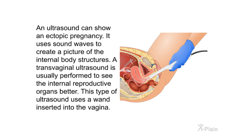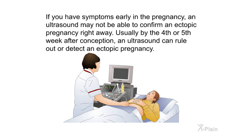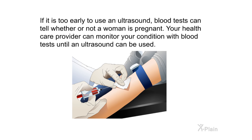An ultrasound can show an ectopic pregnancy by using sound waves to create a picture of internal body structures. A transvaginal ultrasound is usually performed to see the internal reproductive organs better, using a wand inserted into the vagina. If symptoms appear early in pregnancy, an ultrasound may not immediately confirm an ectopic pregnancy. Usually by the fourth or fifth week after conception, an ultrasound can rule out or detect an ectopic pregnancy. If it is too early, blood tests can indicate whether a woman is pregnant, and your provider can monitor your condition until an ultrasound can be used.